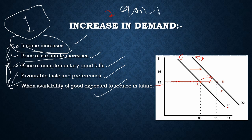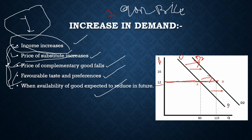The first factor in the determinants of demand is the own price of the commodity, which is kept constant. Since income is the variable factor here, price is represented on the y-axis as constant. The demand curve moves towards the right because there is a change in one of these five factors.